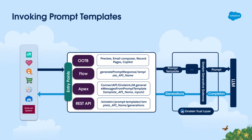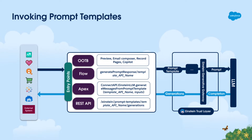Some out-of-the-box entry points allow you to invoke prompt templates from Salesforce, such as the preview functionality in Prompt Builder, the Email Composer, Lightning Record Pages, or Copilot. On top of that, you can also invoke templates from your custom business logic by using Flow, Apex, or the REST API.